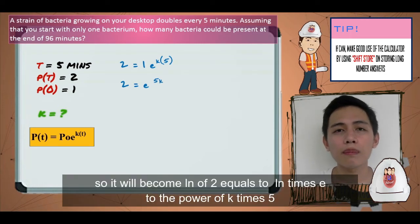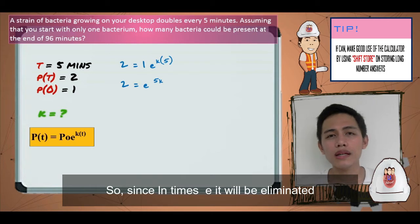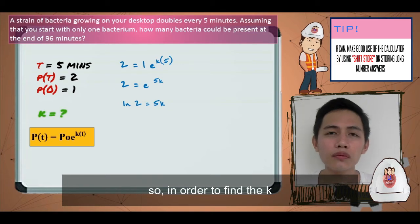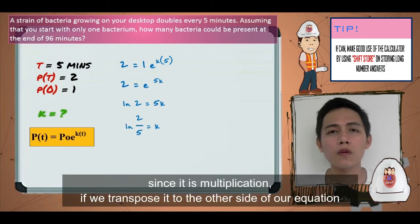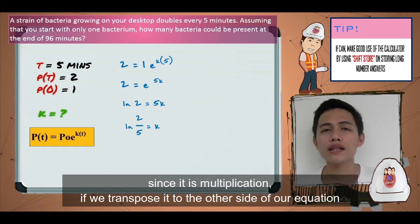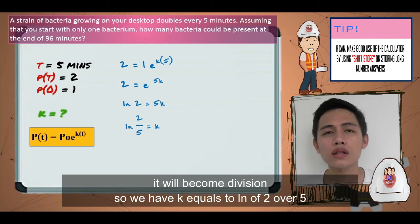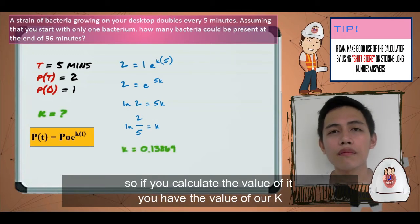It will become ln of 2 equals ln times e to the power of k times 5. Since ln and e cancel each other, we have now ln of 2 equals k times 5. In order to find k, we must transpose the number 5. Since it is multiplication, if we transpose it to the other side of our equation, it will become division. We have k equals ln of 2 over 5. If you calculate the value of it, you have the value of our k.